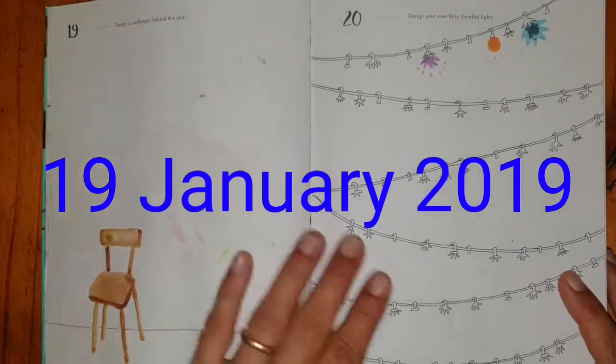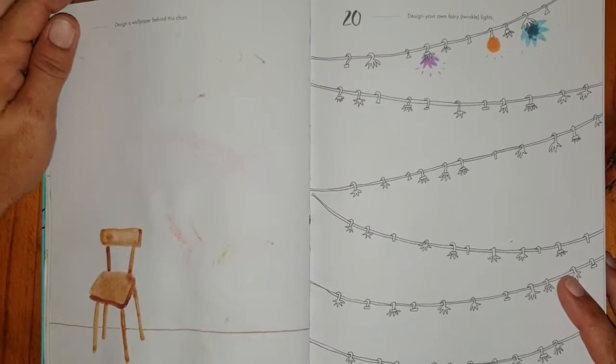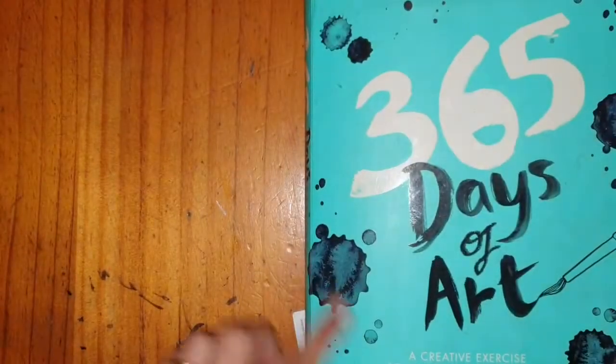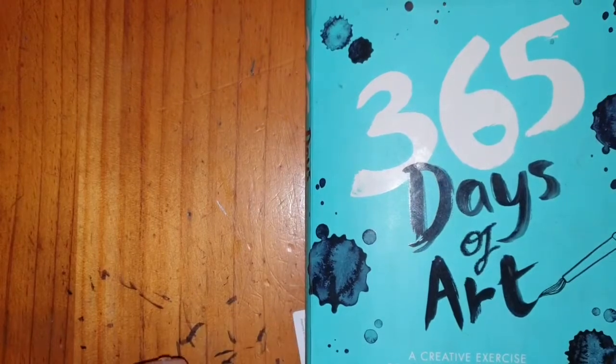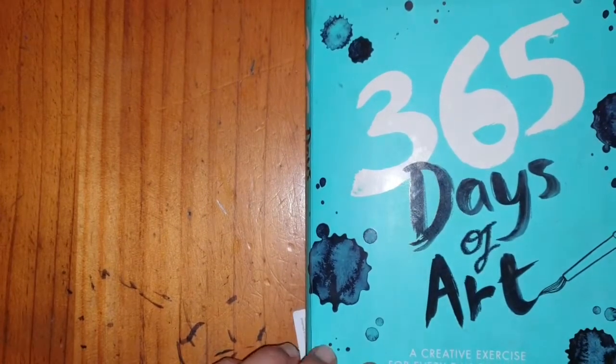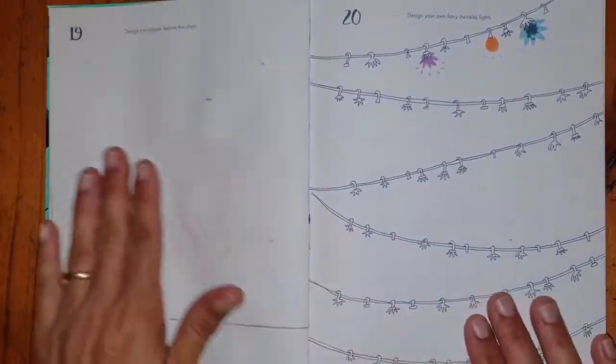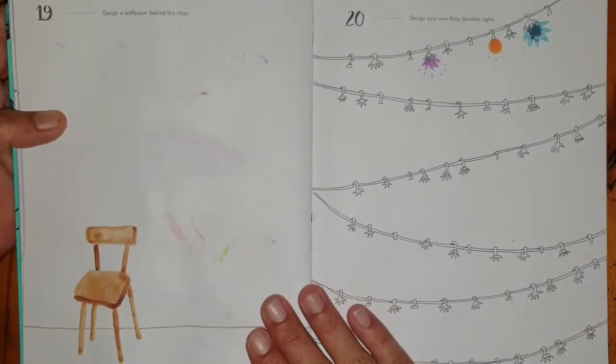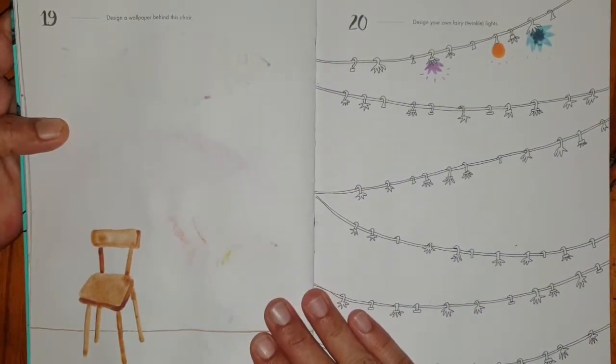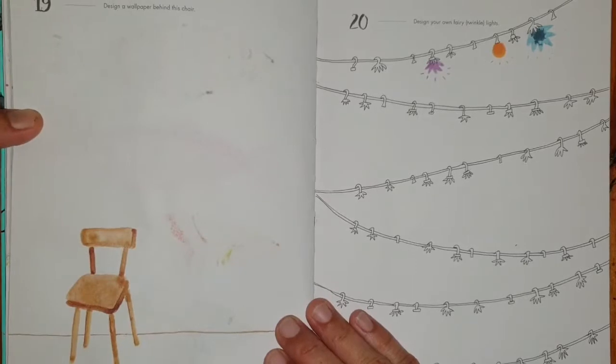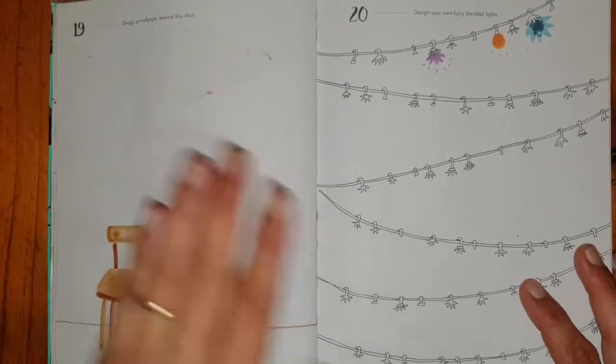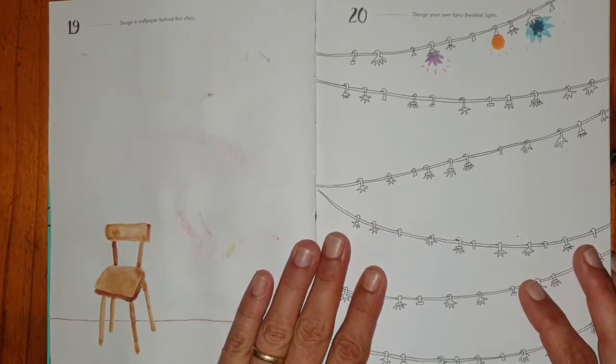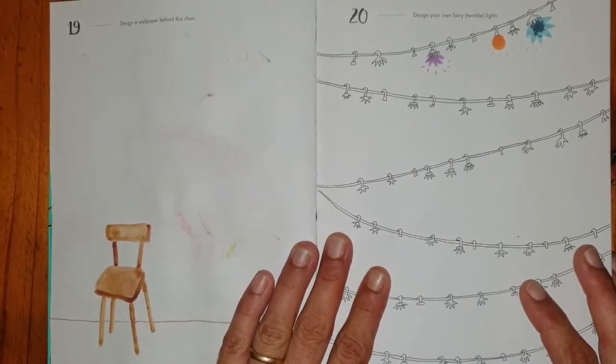Hello, this is Kathy the Arty Mummy and we are back again with a 365 day challenge with 365 Days of Art, a creative exercise for every day of the year by Lorna Scobie. Our prompt for today, day 19, is design a wallpaper behind this chair. So today I'm going to teach you how to create a repeating pattern.